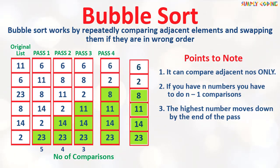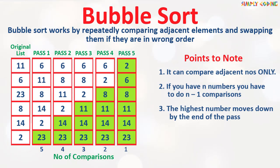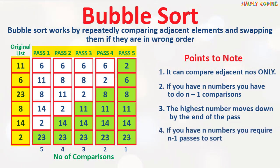In the last pass we have 2 numbers to compare and since 2 is smaller we move it up. As you can see, in every pass you push the biggest value down and slowly the smallest value bubbles up. We had 6 numbers and it required 5 passes to get it sorted. So if we have n numbers we will need n-1 passes to get it sorted.